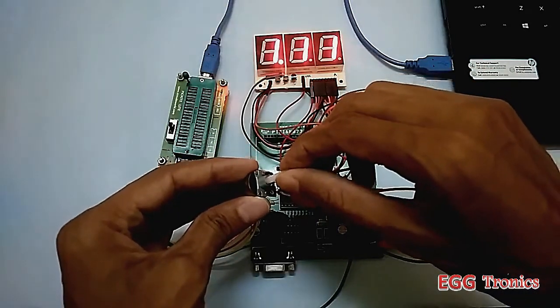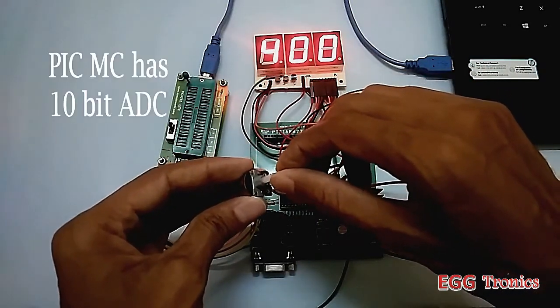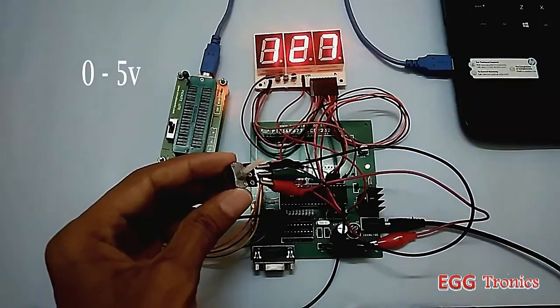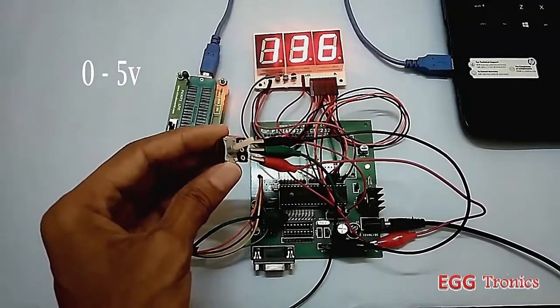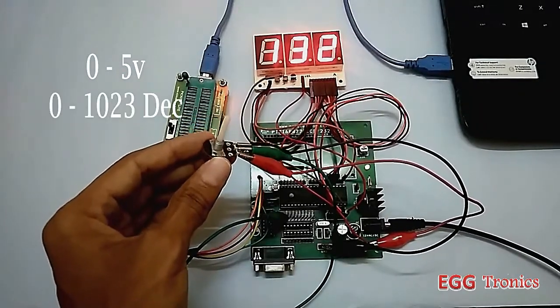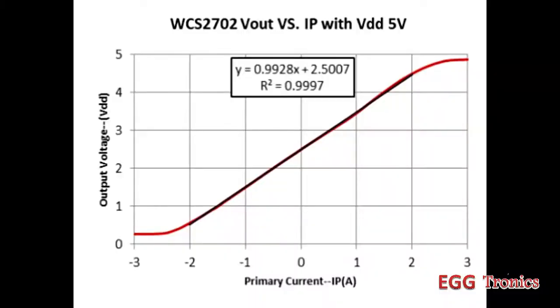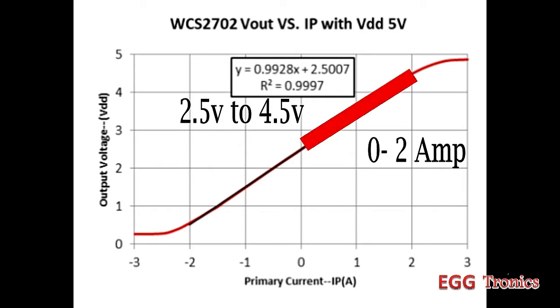PIC microcontroller has a 10-bit ADC, so a voltage varying between 0 and 5 volt will produce a decimal value from 0 to 1023. According to the datasheet of the current sensor, the voltage rate will be between 2.5 volt and 4.5 volt to read the value between 0 and 2 amps.